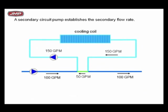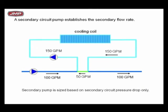Now you see how the good Lord's T-law is working for you. That first T has 100 GPM in from the primary plus 50 GPM from the common pipe — 150 GPM going to the secondary circuit cooling coil. Coming out of the cooling coil, 150 GPM: 100 GPM going back to the system and 50 GPM reverse flow going back. The secondary circuit pump is sized based on secondary pressure drop only. The secondary pump head is the secondary loop pressure drop only — just the pressure drop in the cooling coil circuit and the piping to the common pipe and back. Do not include any of the pressure drop in the primary loop.